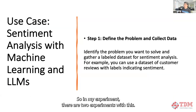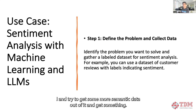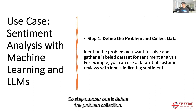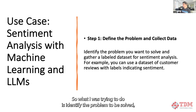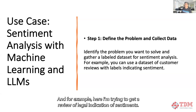How do we do that? In my experiment there are two experiments. One is I'm going to take that same example of diabetes and tap into OpenAI and try to get some more semantic data out of it. Step number one is define the problem collection — identify the problem to be solved, label the dataset for sentiment analysis, and get a review label indication of sentiments.